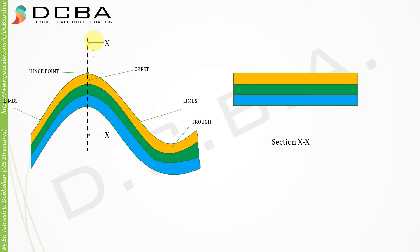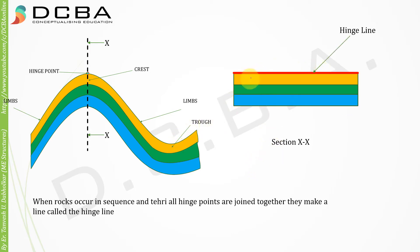If I take cross-section X-X, this is how it will look. When I join the hinge points along the length, what I get is the hinge line. So when rocks occur in sequence, all the hinge points are joined together to make a line called the hinge line — you can see this is a hinge line where all those hinge points are connected.